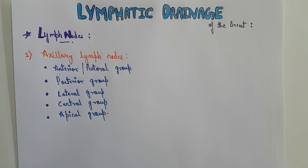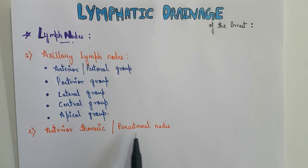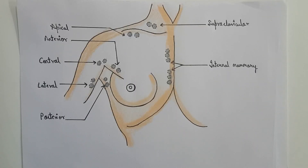The next group of lymph nodes we have is the anterior thoracic or the parasternal lymph nodes. These lymph nodes are also referred to as the internal mammary lymph nodes. Now let us locate the axillary lymph nodes and the anterior thoracic or parasternal lymph nodes with the help of this diagram.